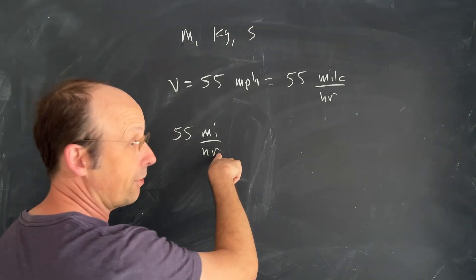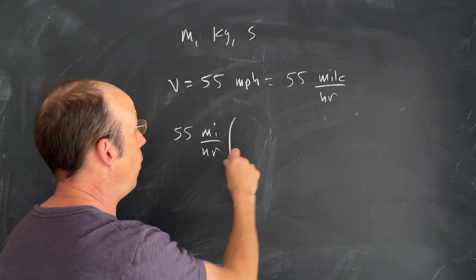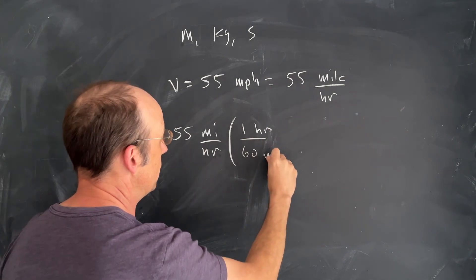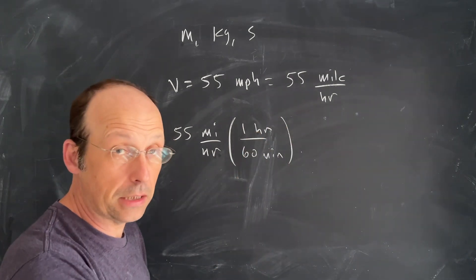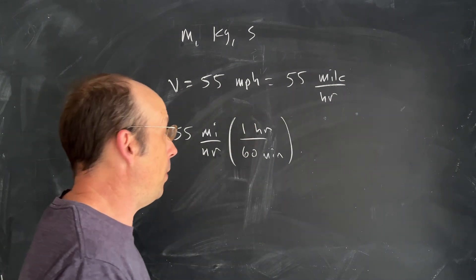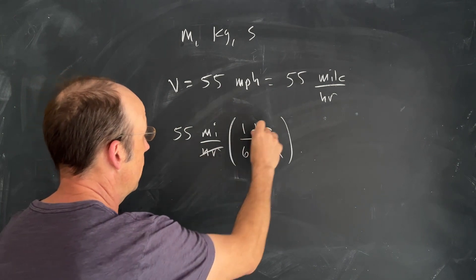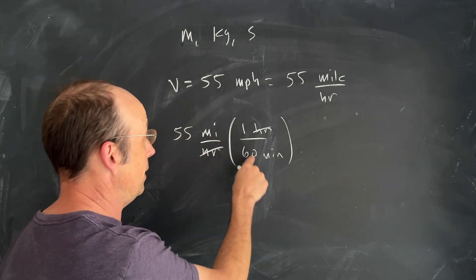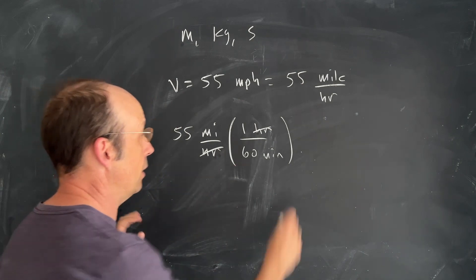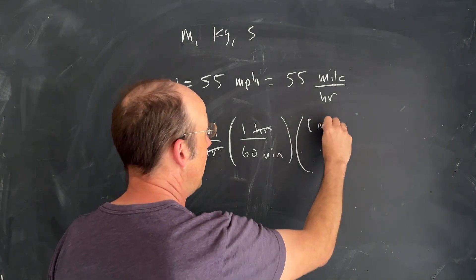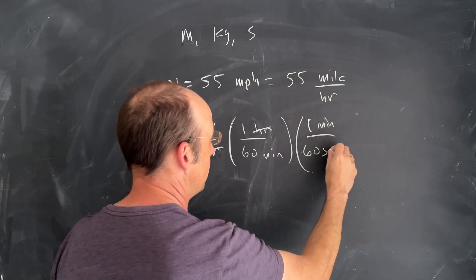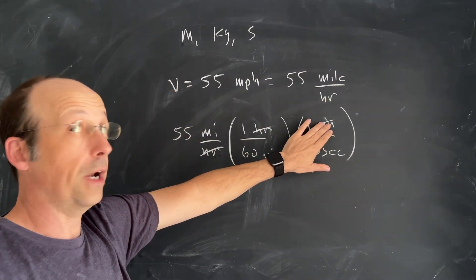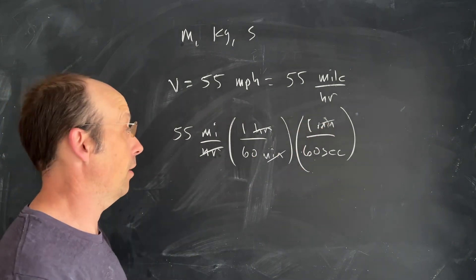Let's convert hours to seconds. First, multiply by (1 hour / 60 minutes) — one hour equals 60 minutes, so this is a quantity of one, and the hours cancel. Now we have 55/60 miles per minute. Then multiply by (1 minute / 60 seconds), and the minutes cancel. You need to place units on the opposite side of what you want to cancel.